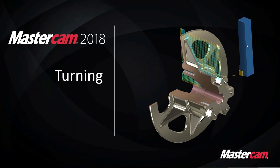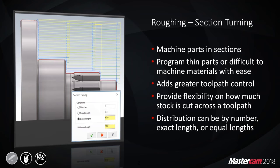Ryan Mermel is now presenting and will be covering enhancements starting on the turning side. The first enhancement is section turning, found in the roughing toolpath of Mastercam Lathe. It allows you to safely machine thin parts with greater ease and handle difficult machining materials such as alloys or plastics, offering control over the number of cuts, exact length, or equal lengths of cut.